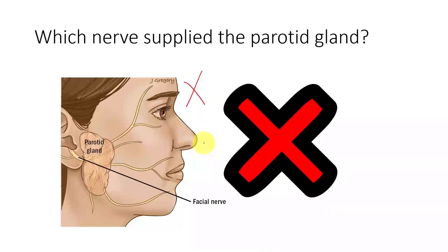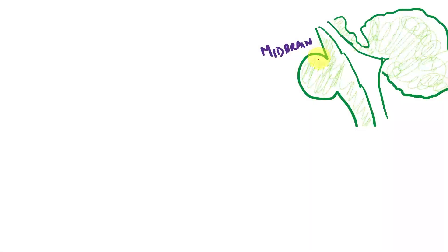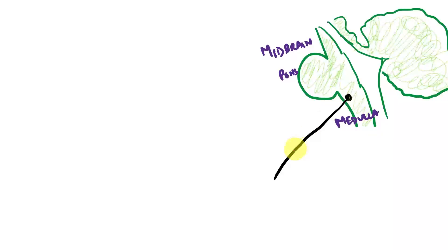So what is the secretomotor innervation of the parotid gland? Let us look at a diagram. Suppose this is the brainstem — this is the midbrain, this is the pons, and this is the medulla. In the medulla you have the inferior salivatory nucleus shown in black ink. From there you have the glossopharyngeal nerve emerging out.